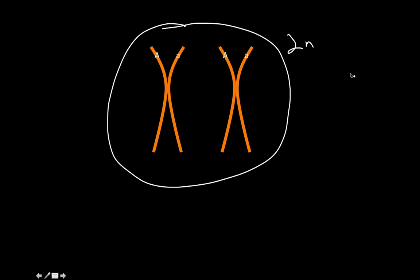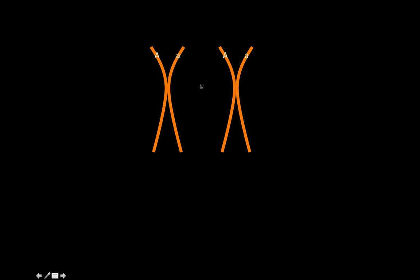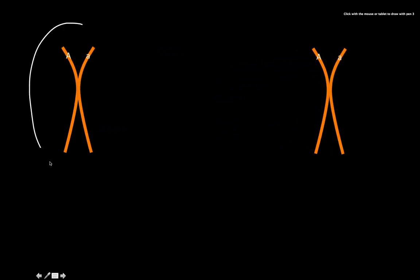For the first of Mendel's laws, we're going to take a diploid cell. We know there are 23 chromosome pairs, but we're just going to worry about one chromosome pair for this example. It's diploid, meaning we have two copies of each chromosome. We have an orange chromosome here and an orange chromosome here, and I've labeled the alleles — these are alleles for hair color. Big A is for dark hair and little a is for blonde hair.